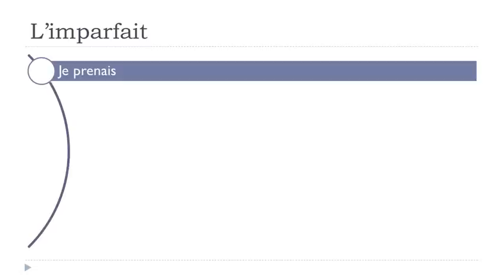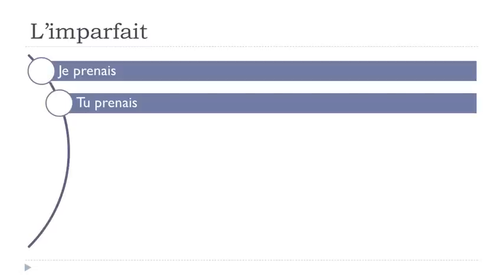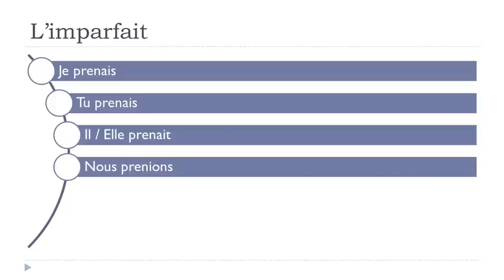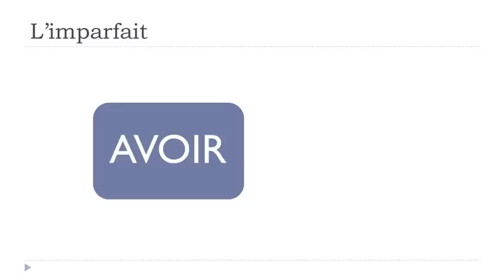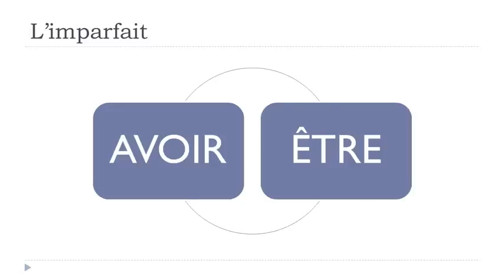For 'prendre': je prenais, tu prenais, il prenait, elle prenait, nous prenions, vous preniez, ils prenaient, elles prenaient. Remember the final s is not pronounced — je prenais — and final t is not pronounced — il prenait. All singular and third plural forms share the same 'a' sound.